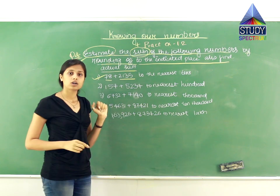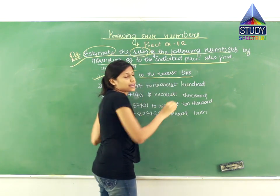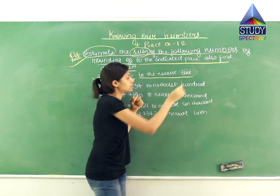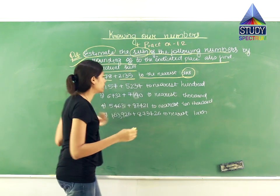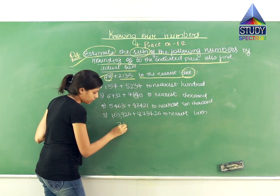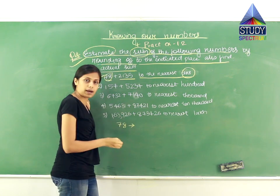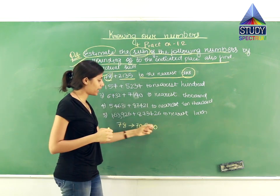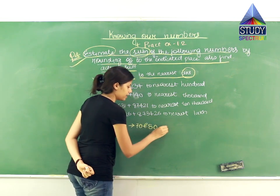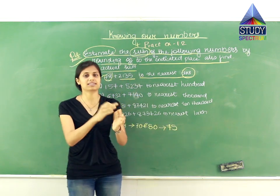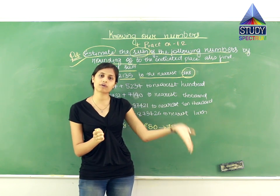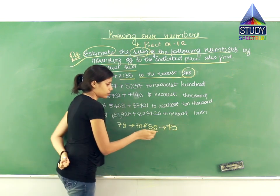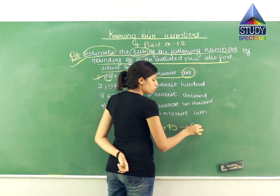The first question: 78 plus 2135, to the nearest 10s. So we round off to the 10s place. Take 78 — it lies between 70 and 80. The midpoint between them is 75. If the number is less than 75, it will be rounded off to 70. If greater than 75, it will be rounded off to 80. Since 78 is greater than 75, it will be rounded off to 80.